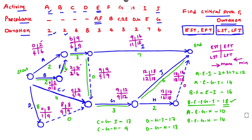We have now found EST, EFT, LST, and LFT for all activities. Notice that along the critical path B–F–E–G–J, there is no difference between EST and LST, or between EFT and LFT — meaning there is zero float. Any delay on the critical path will directly affect the total project duration. This is the method to solve a CPM problem. Thank you.